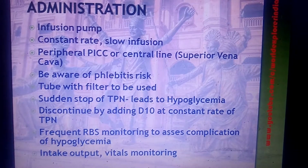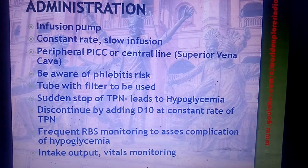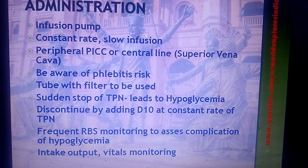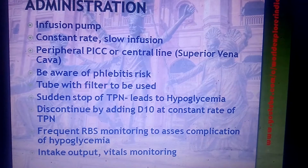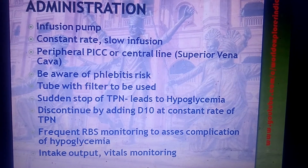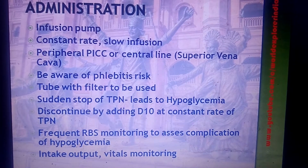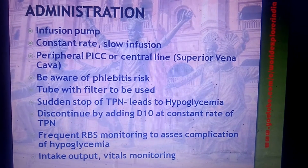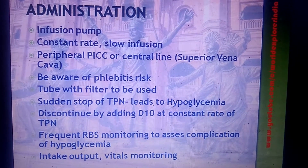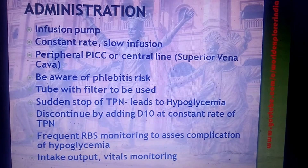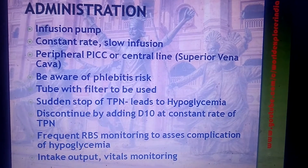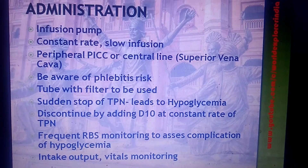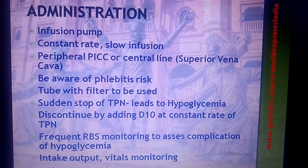The usually preferred site is the superior vena cava. Be aware of phlebitis risk, and a tube filter should be used. Sudden stopping of TPN will lead to hypoglycemia, so TPN should not be stopped suddenly. You can taper the TPN during the last hours to avoid rebound hypoglycemia. Discontinue by adding D10% or maintaining a constant rate to avoid hypoglycemia.